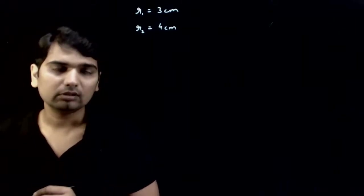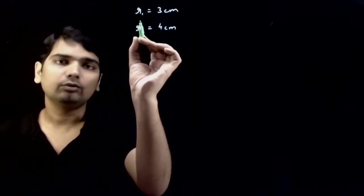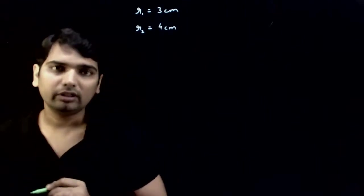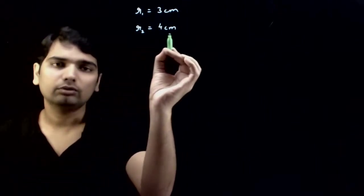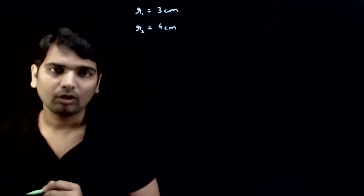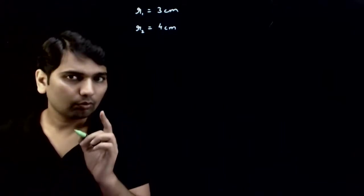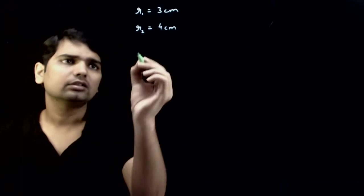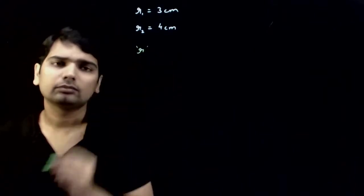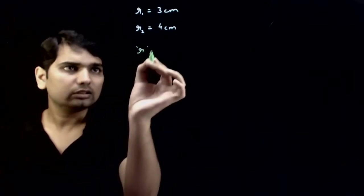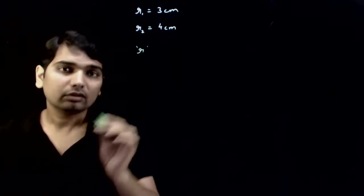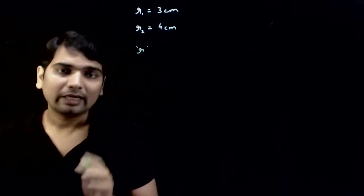We have two soap bubbles in vacuum of radii R1 equal to 3 centimeter and R2 equals to 4 centimeter. These two bubbles coalesce to form one bubble of radius R. We need to find this radius R if the whole process is isothermal.